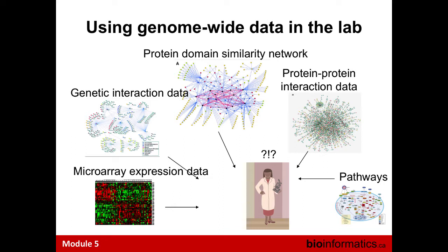In most cases you don't have to generate new data — as long as you have some genes you want to understand, you can look at public databases. For example, you can look at gene expression data sets to see temporal or tissue-specific expression patterns, interaction databases like genetic or protein interaction data to learn about interacting partners, proteins with similar domain composition to figure out molecular functions, and pathway databases like MSigDB, KEGG, or Reactome to understand what pathways your genes are in.